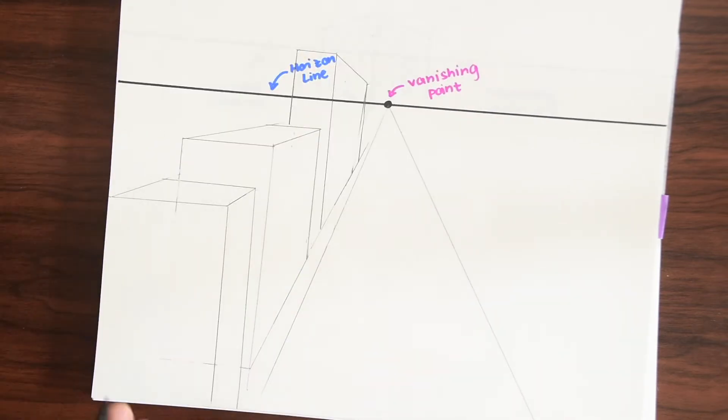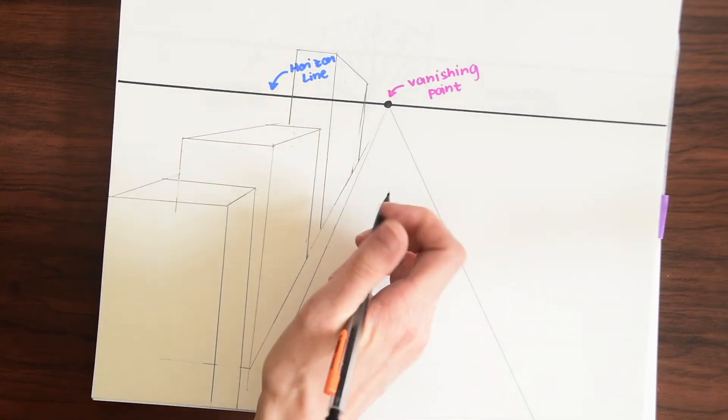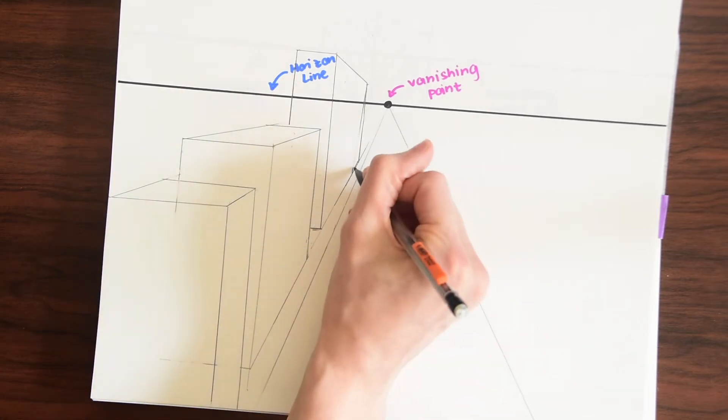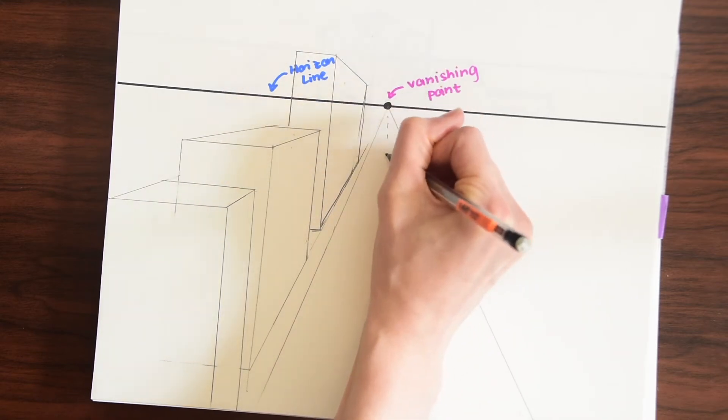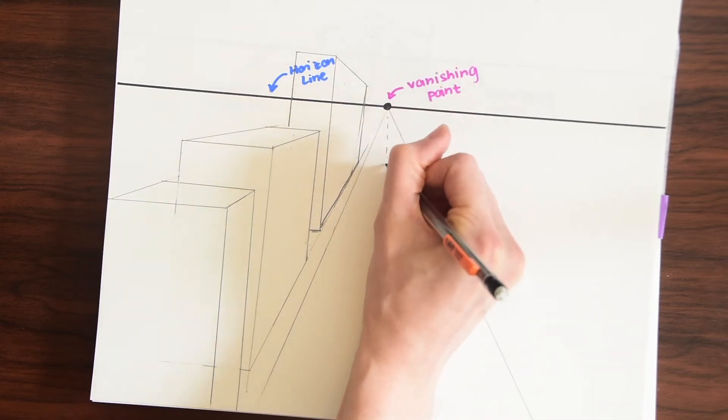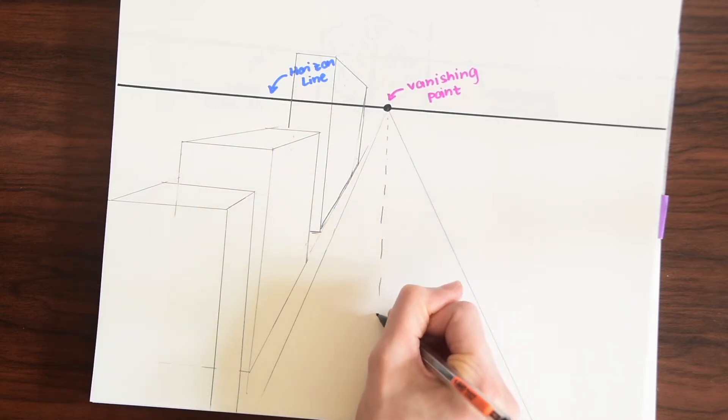So hopefully from this little quick demonstration with the building you can see how we use the vanishing point and how we involve perpendicular and parallel lines and the idea of perspective where something far away is smaller and then slowly gets bigger and bigger like so.